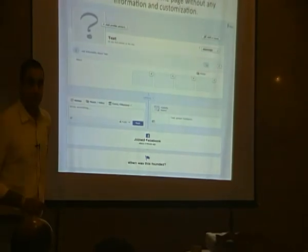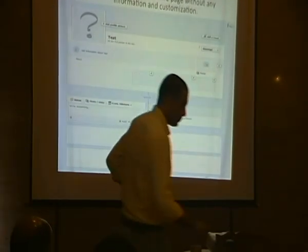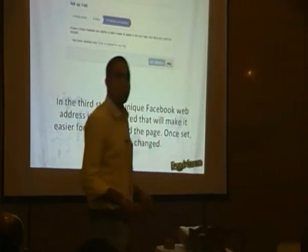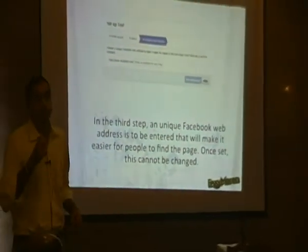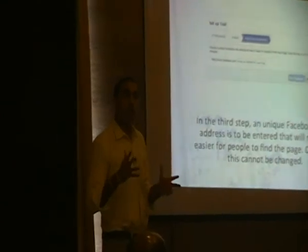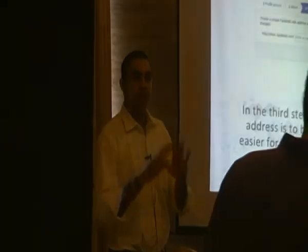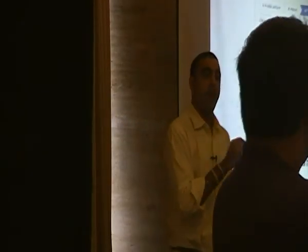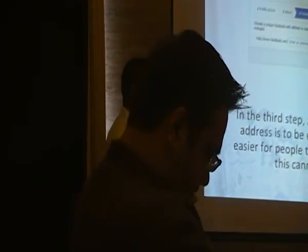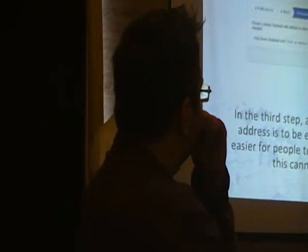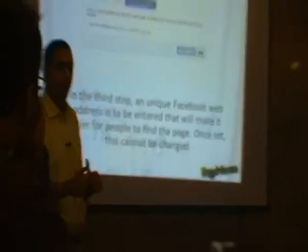Some people don't get the web address option when creating a page — this is common. If you don't get this option, you need a minimum of 25 fans on your page. Simply send direct messages to about 25 friends to get them to fan your page. 25 is the minimum number of fans required to activate this option; once you have 25 fans, this option will automatically activate itself.